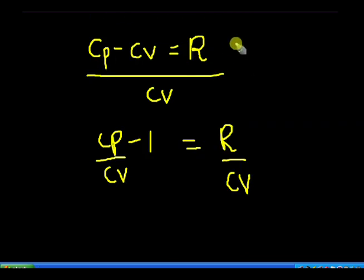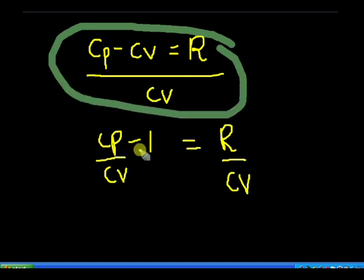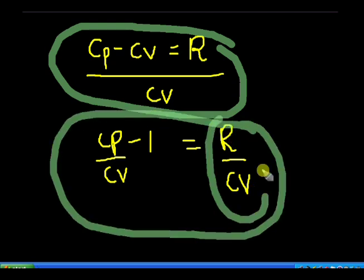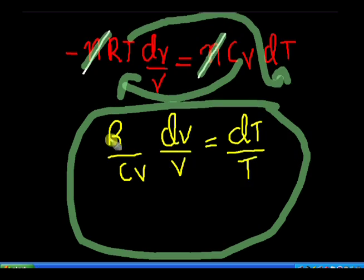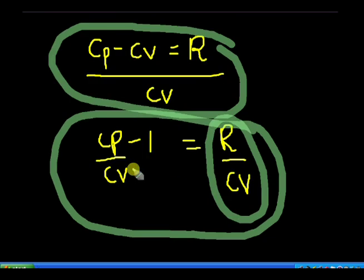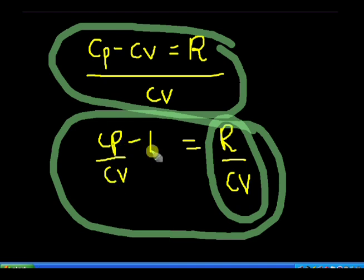We know that Cp minus Cv is equal to R. Dividing this equation by Cv, we get Cp/Cv minus 1 equal to R/Cv. This quantity, that is R/Cv, is going to be substituted right here — we put the value from this relation, substituting R/Cv by Cp/Cv minus 1.